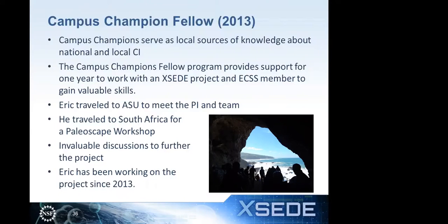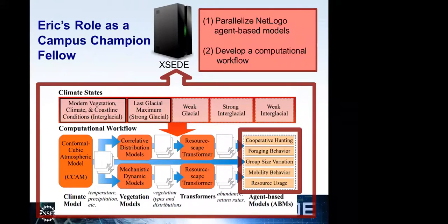The picture in the bottom right — Curtis does a disservice by not showing pictures of his beautiful cave site sitting on the ocean. He allowed us to do a tour of the sites, and it's a gorgeous dig site. My role as a fellow was kind of two pieces: the first was to parallelize the agent-based models at the end of this pipeline; and the other aspect was to help develop a computational workflow. There are a lot of moving pieces: we have the CCAM climate model at the beginning, those data are passed to vegetation models — we have two different models based on competing theories — and we feed that data to get a diverse set of outputs regarding what vegetation looks like in South Africa.